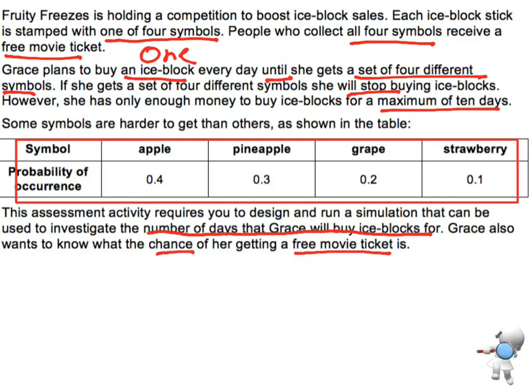There are two problems that we need to do here. One is that we want to find the mean number of days that Grace will buy ice blocks for, and we also want to know the probability — chance is another name for probability — of her winning a free movie ticket.